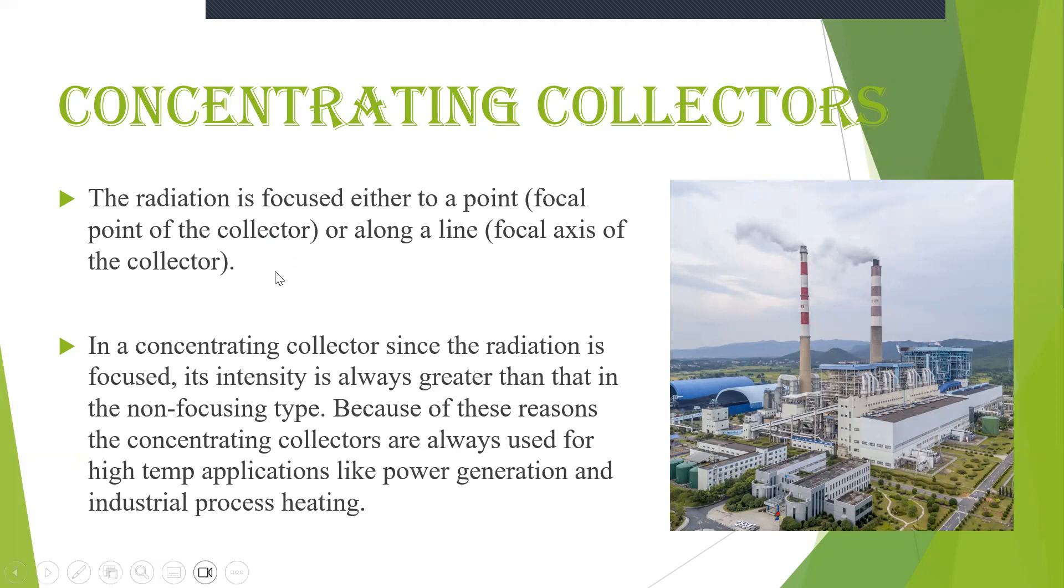Generally, what happens is in focusing collector the area of the observer is smaller than the area of the collector. That is what we have seen. But in non-concentrating collector what happens? The area of the observer is equal to the area of the collector. Here in concentrating collectors the radiation is focused. That is, the intensity is always greater than that of the non-focusing type.